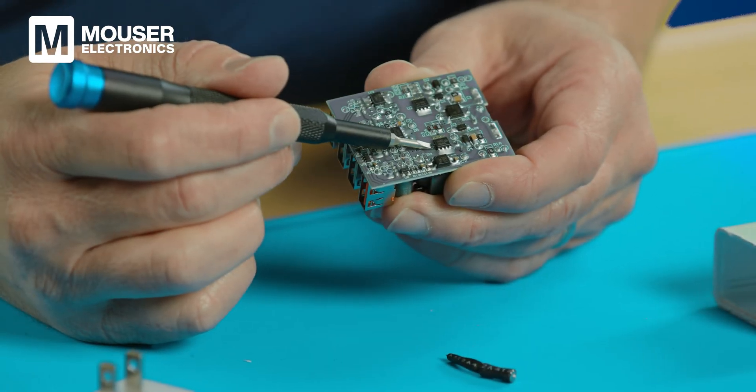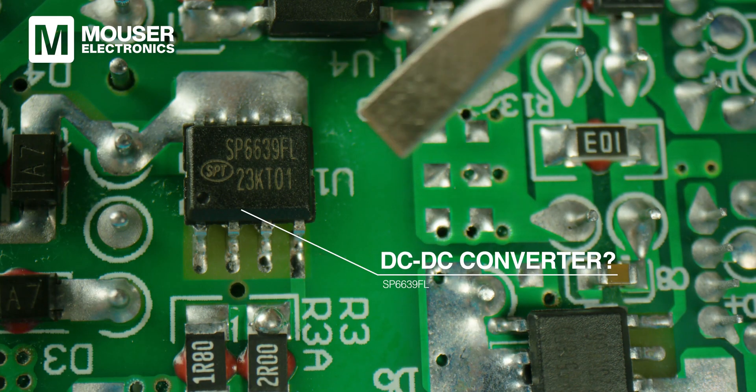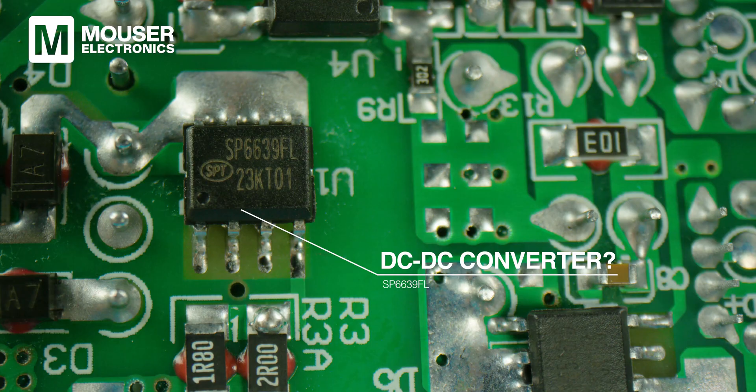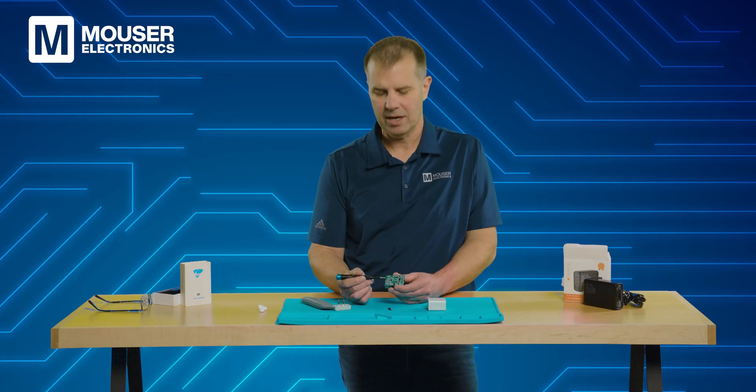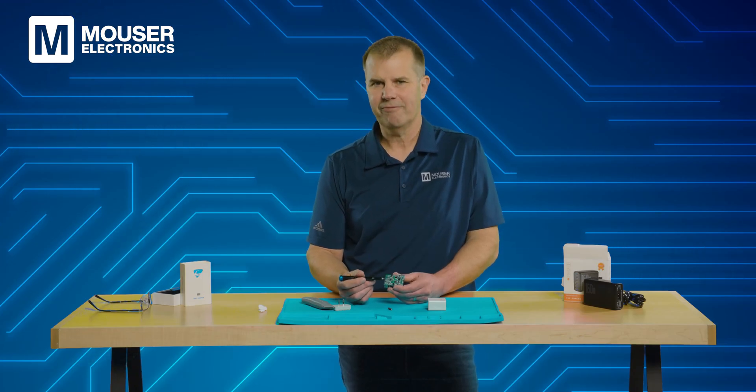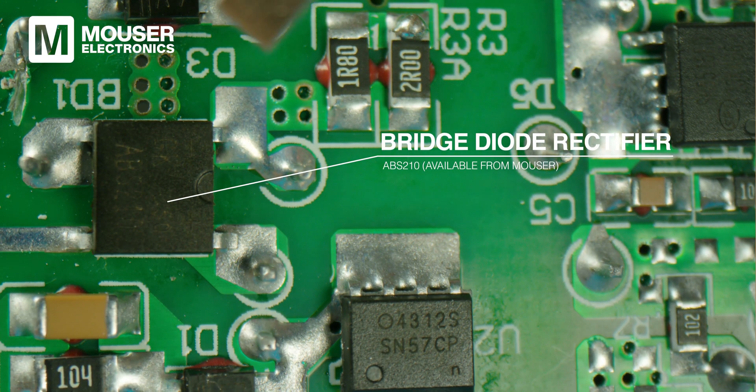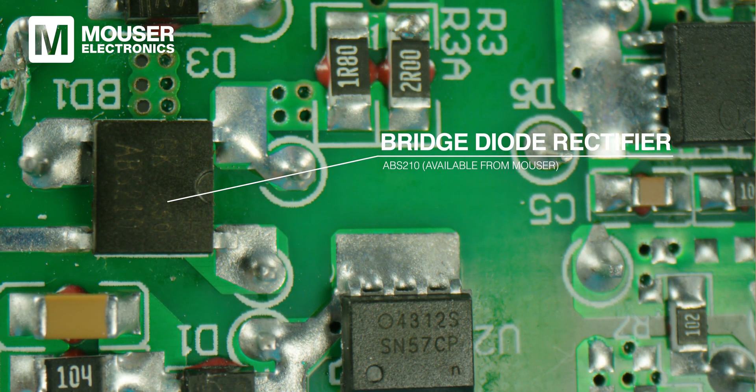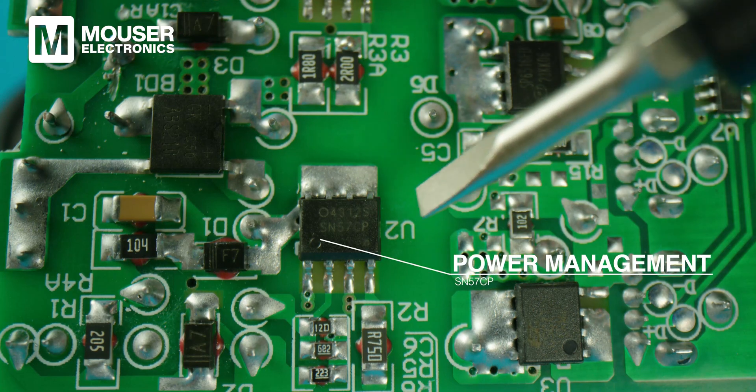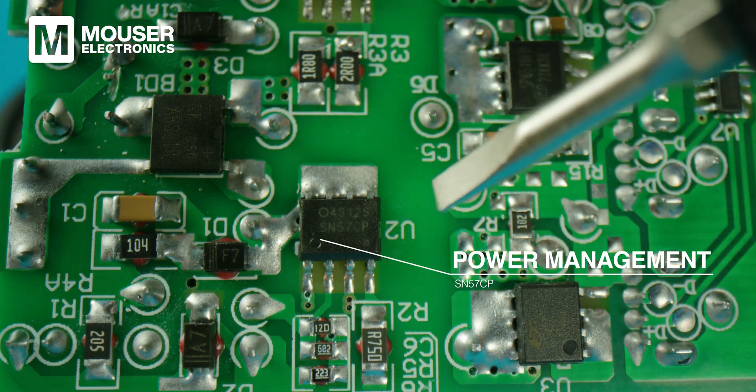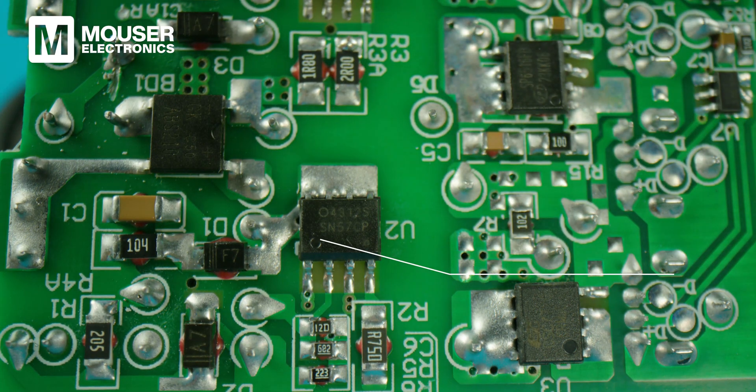Right here is U1. Now it is marked SP6639FL. I think it's a DC to DC converter, but I couldn't find a pin out online that matched the layout with four pins on one side, all grounded. Over here, the part labeled BD1 is an ABS-210 bridge diode rectifier. Here at the part labeled U2 is the SN57CP. This is a power management IC.